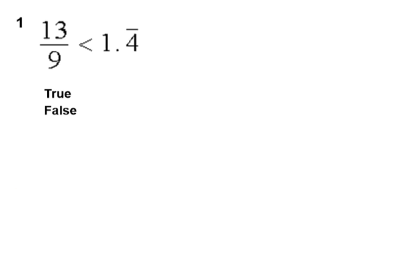Question number one, 13 ninths is less than 1 decimal 4 with a line above it. What does that line mean? Of course it means a repeating decimal.